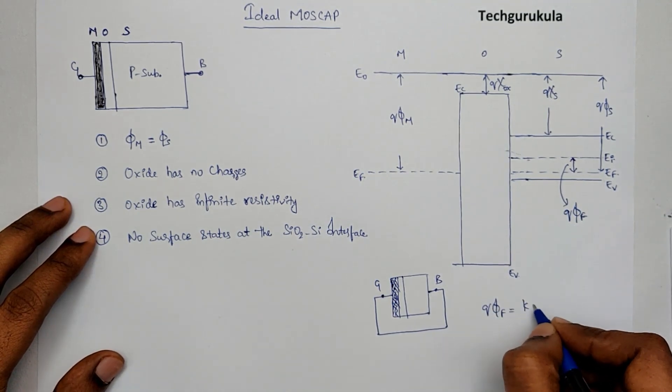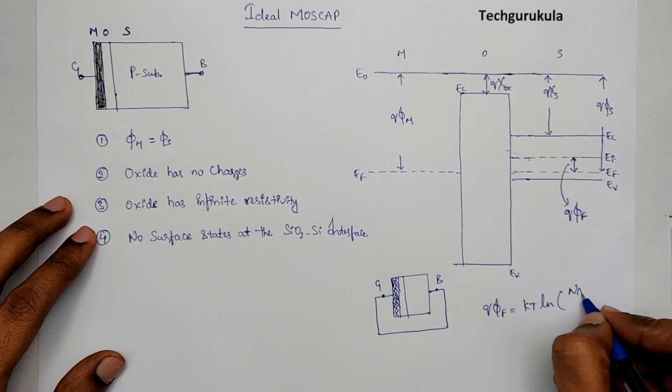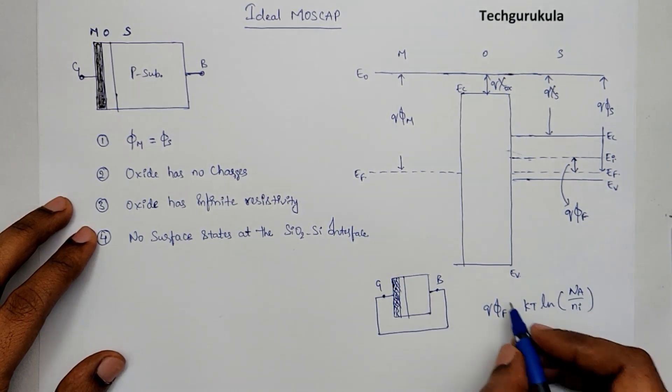We know what is Q times phi F value, which is KT ln of Na over Ni.